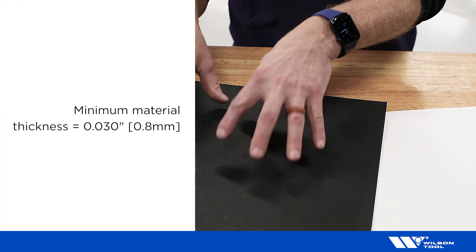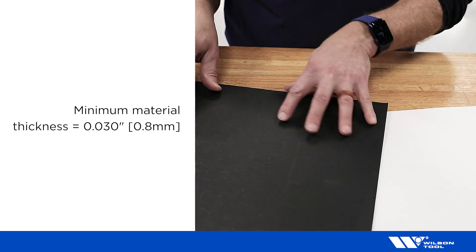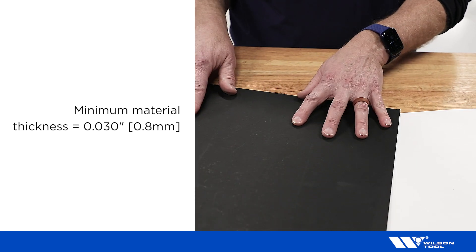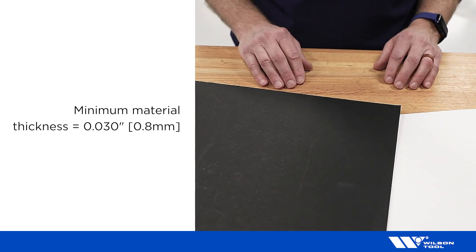So material thicker than 0.030 inches or 0.8 millimeters is pretty good for a wheel tool. When we get thinner than 0.030 inches, then it gets to be too thin for wheel tools.